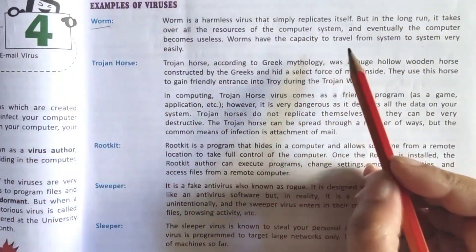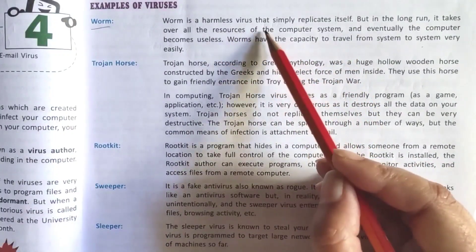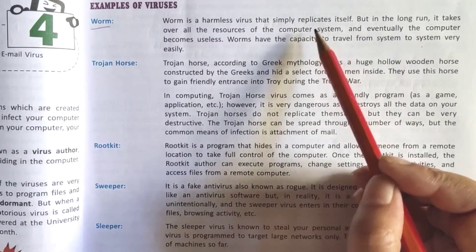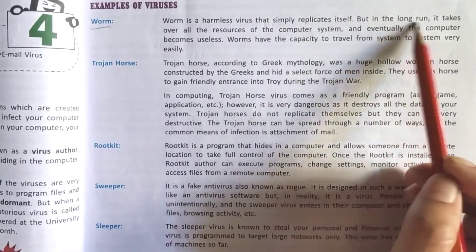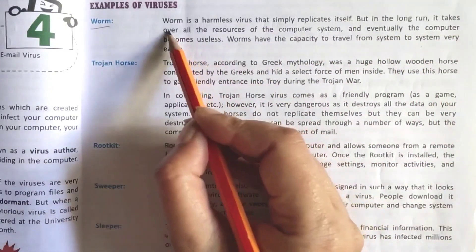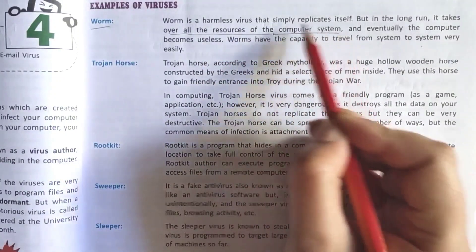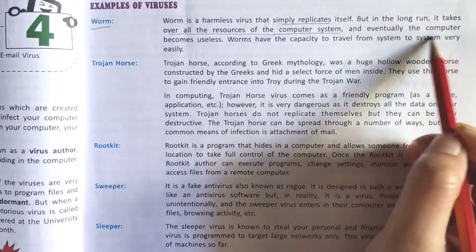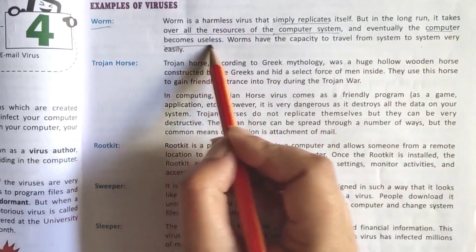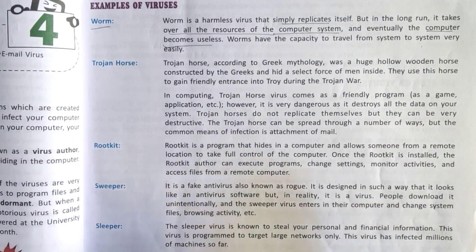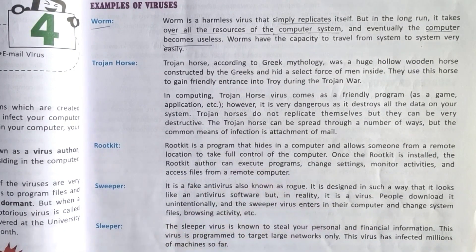First is a worm virus. Worm virus is a harmless virus — it simply replicates itself and creates copies of itself. But over a long time, it takes over all the resources of the computer system and eventually the computer becomes useless, because the storage memory is filled with duplicate copies of the software or folders.